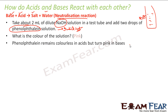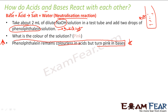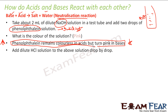Phenolphthalein remains colorless in acid but turns pink in base. This is the characteristic of phenolphthalein. Just to remind you: phenolphthalein is an indicator which turns colorless in acid but turns pink in base.